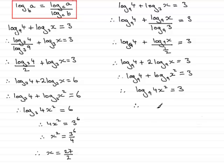Antilogging this means that I now have 4x squared equals 9 to the power 3. And if I divide both sides by 4, I have x squared equals 9 cubed divided by 4. If I square root both sides, do it on a calculator, you'll find that you'll get 27 over 2. The same answer as we had before.